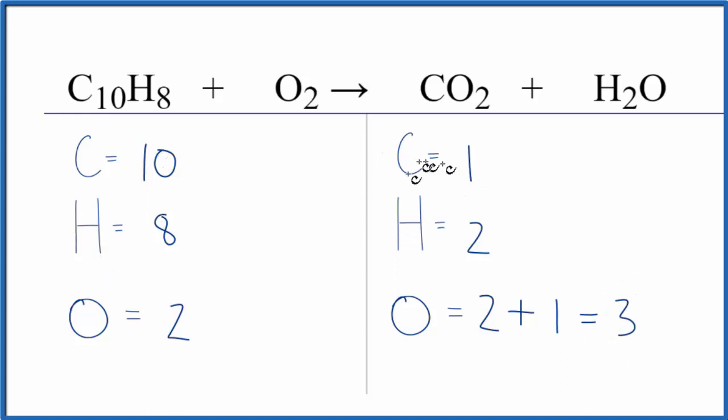Let's just update the carbons. We could put a 10 here. 1 times 10. That would balance the carbon atoms. We do need to update the oxygens. So we have 2 times 10. That's 20 plus the 1 oxygen in water, 21.